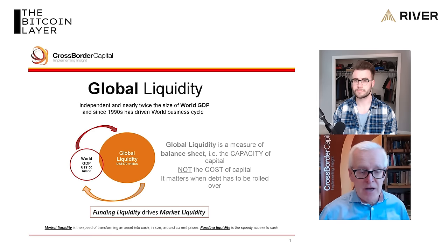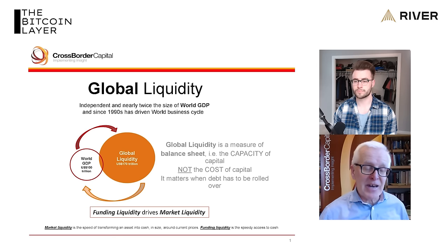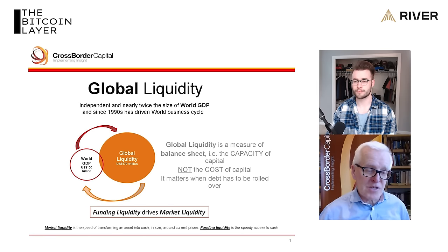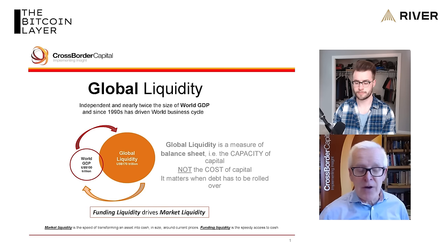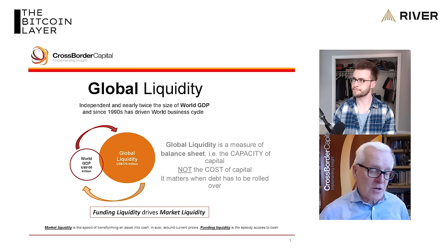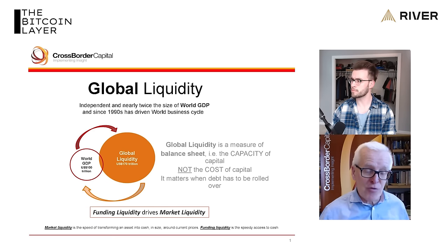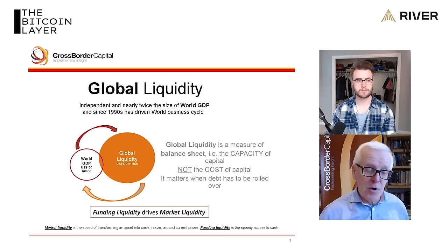Global liquidity is a measure of the capacity of capital in the system. That capacity of capital really matters when there's a big debt burden and that debt has to be refinanced. The whole notion that interest rates are the important bogey in the system — is this wrong? If you've got economies dominated by debt refinancing, consider the world economy: $350 trillion of debt with about a five-year average maturity makes it like $60 to $70 trillion of debt that's got to be rolled over each year. You need balance sheet capacity among the credit providers to do that role. That's what liquidity is. Any mismatch between the size of the rollover and the amount of liquidity available, you get a refinancing crisis.